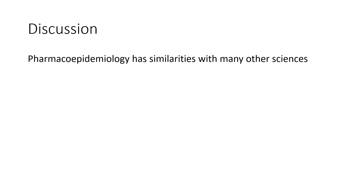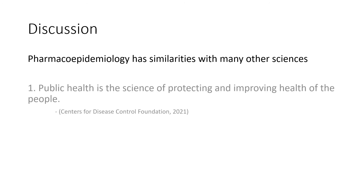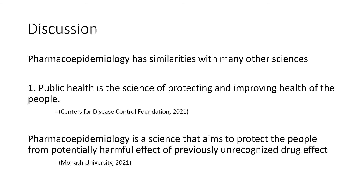Now we can move on to a more serious note. Now that we understand the basis of Pharmacoepidemiology, we can discuss how we can see many similarities in other fields of science. For example, public health is the science of protecting and improving the health of people, and Pharmacoepidemiology is the science that aims to protect people from potentially harmful effects of previously unrecognised drug effects.